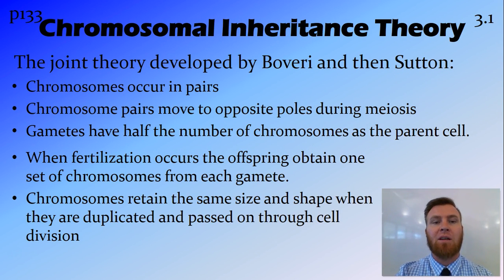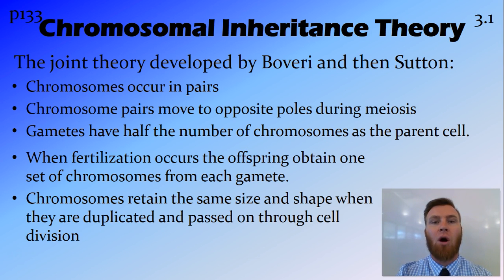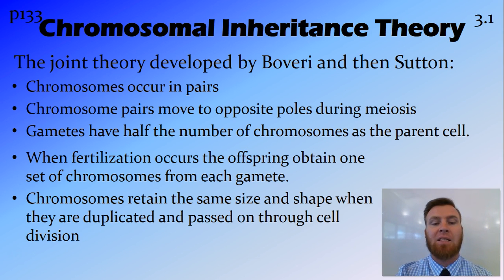The chromosomal inheritance theory is a joint theory that puts the findings of both scientists together. Its key points are: chromosomes occur in pairs called homologous pairs; they move to opposite poles during meiosis; gametes have half the number of chromosomes of the parent cell; when fertilization occurs, the offspring obtain one set of chromosomes from each gamete — one from mum and one from dad; and chromosomes retain the same shape and size when duplicated and passed on, remaining specific to their particular pair.